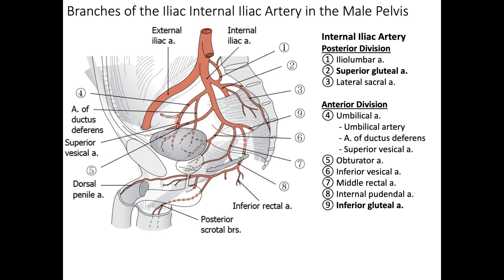The next branch is the obturator artery, which goes through the obturator foramen with the obturator nerve. Next is the inferior vesicle artery, which travels below the bladder. The middle rectal artery goes to the middle portion of the rectum. The internal pudendal artery follows, going behind the sacral ligament through the ischioanal fossa to supply the genitals. Finally, the inferior gluteal artery travels below the piriformis and deep to the pelvic floor muscles. Arteries are named for what they supply, and while the diagram shows the typical pattern seen in approximately 60% of people, slight variations occur in the other 40%.